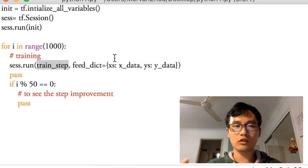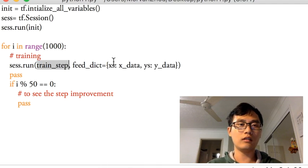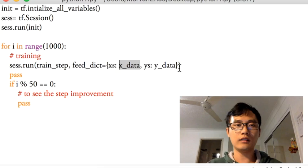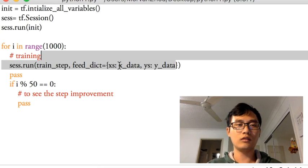If you know stochastic gradient descent, that is to use a part of x_data and a part of y_data to train the neural net. In this example, I'm not going to do that in detail. I just use the whole bunch of data to train this train_step.